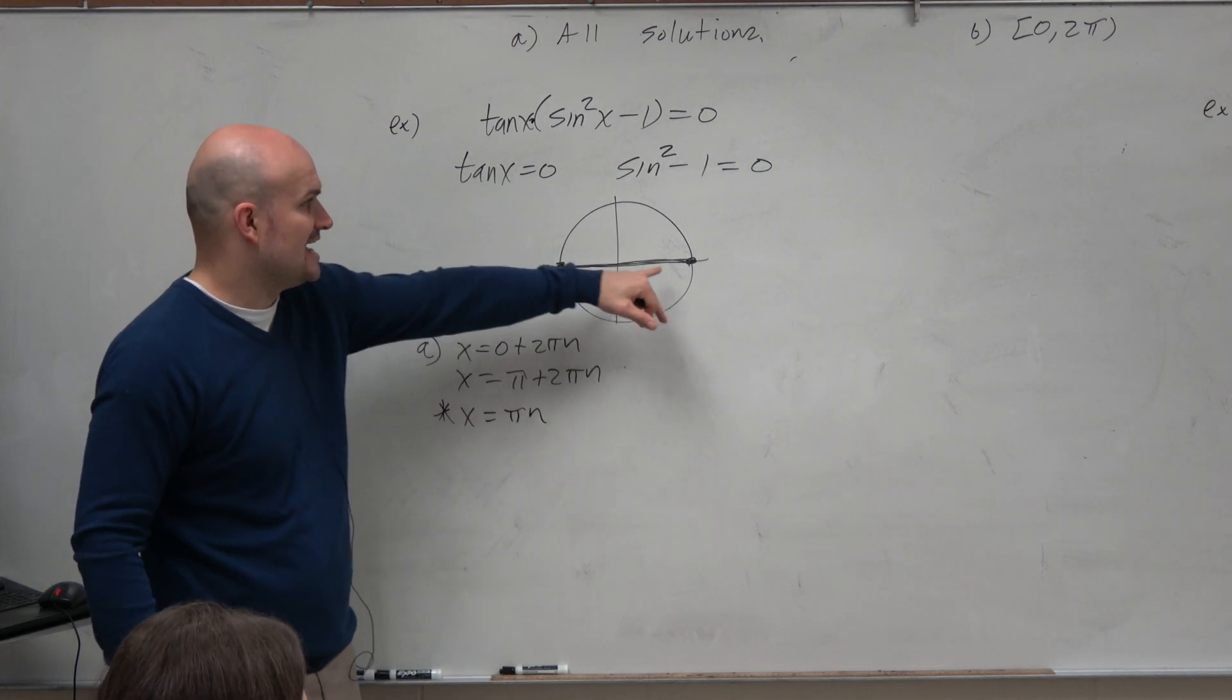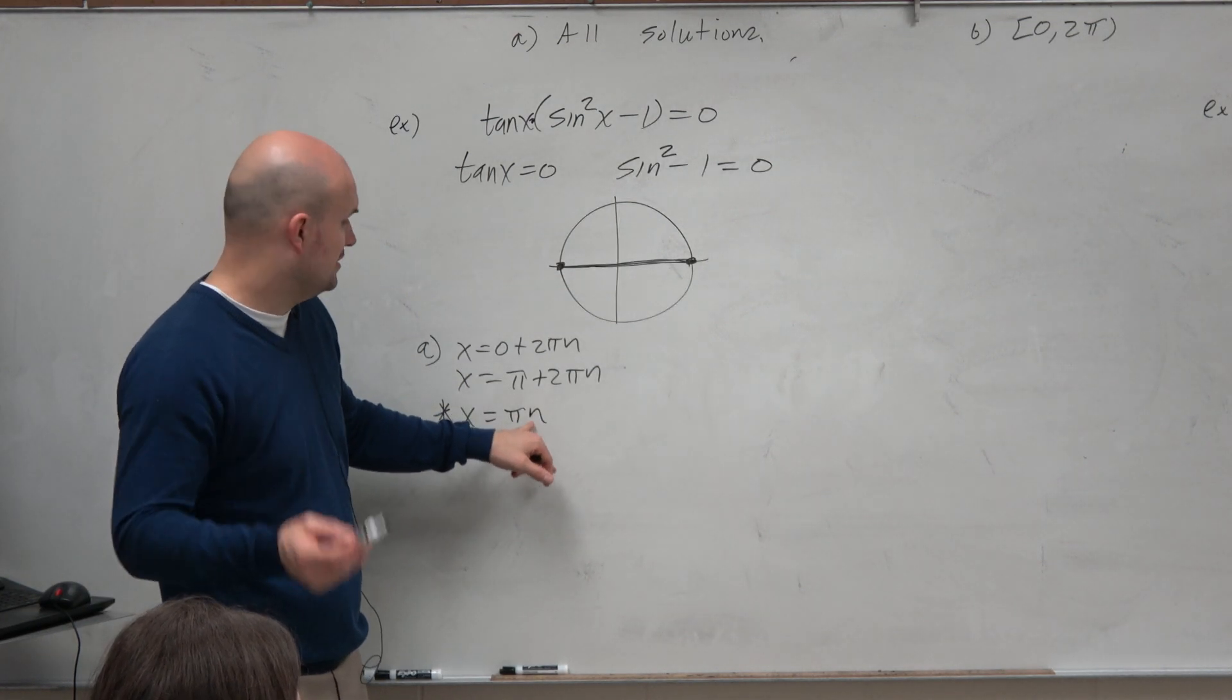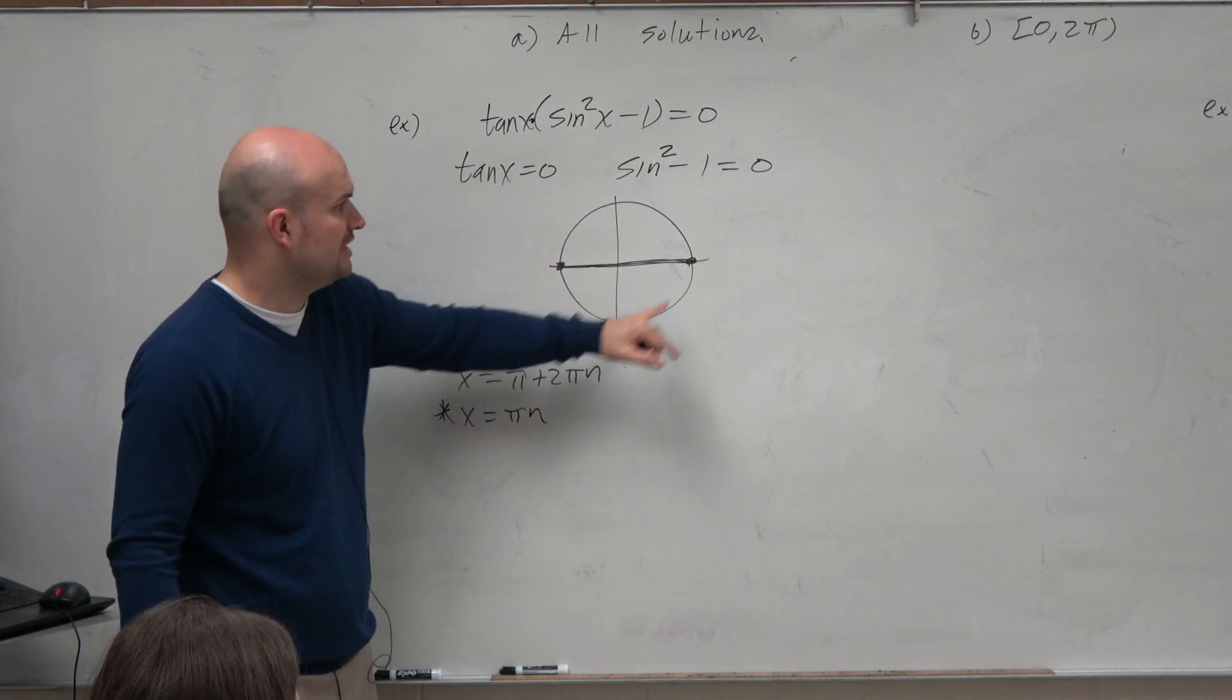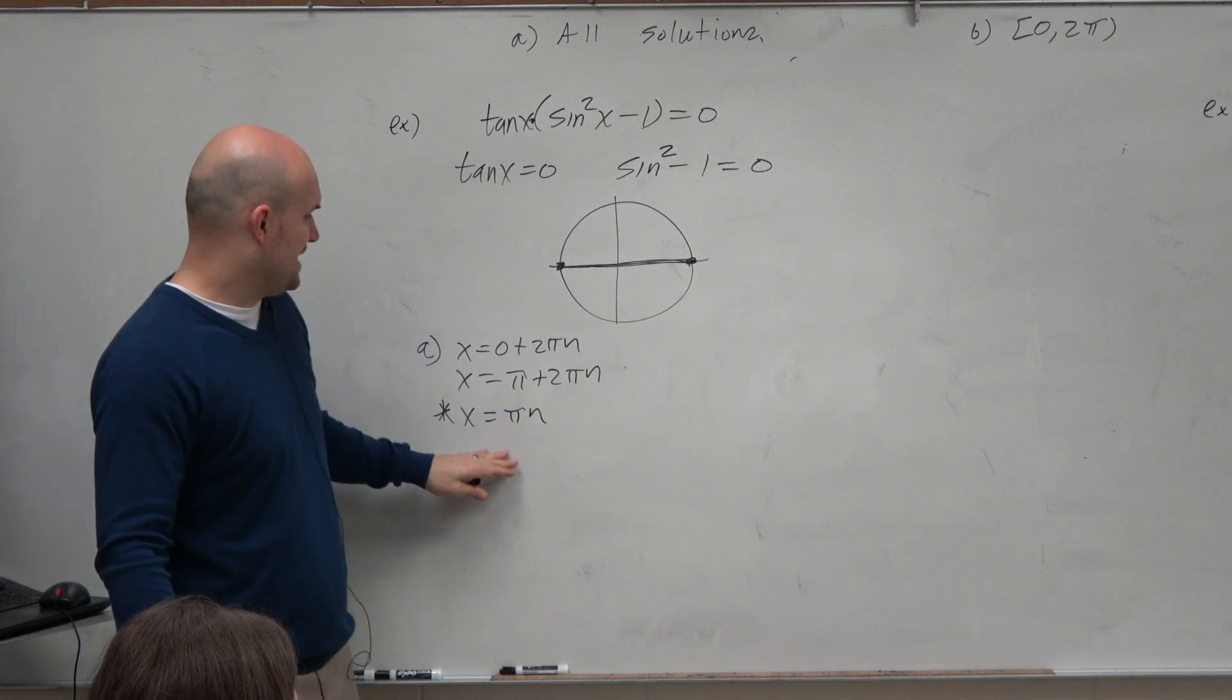x equals π n is going to satisfy 0, right? When n is 0, you get 0. When n is 1, you get π. When n is 2, you get 2π. So that would be your simplified answer.